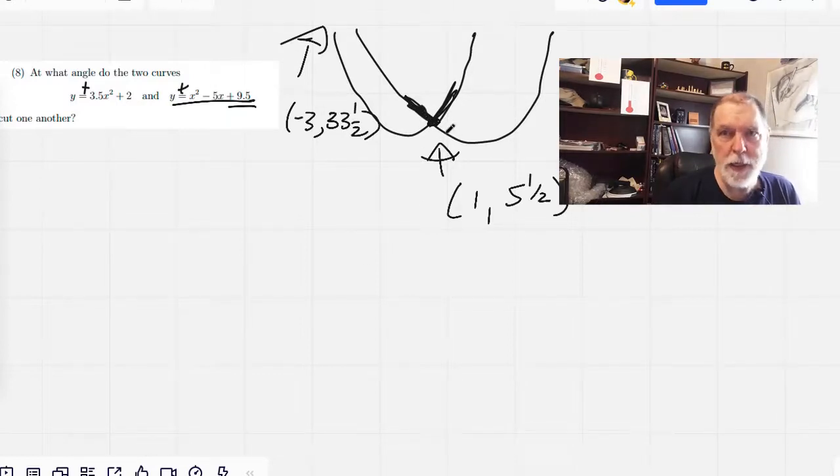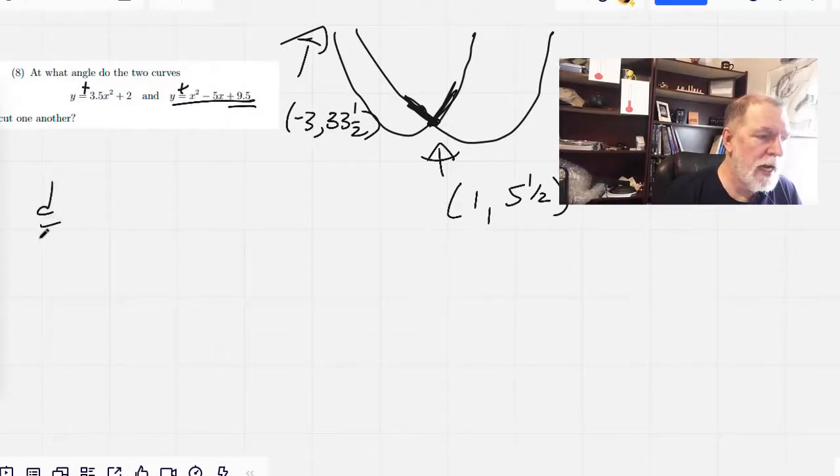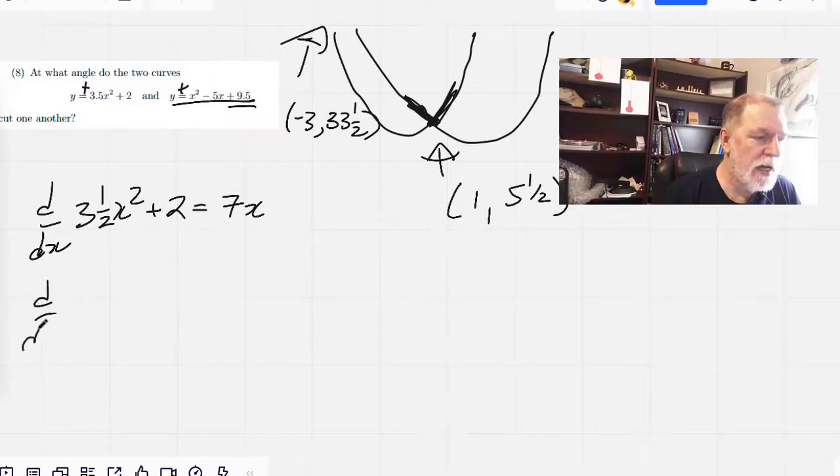So we're going to work out the tangent lines. So let's work out this one first. d by dx of 3 and a half x squared plus 2 equals 7x. And now let's do this one here. d by dx of x squared minus 5x plus 9 and a half equals 2x minus 5.